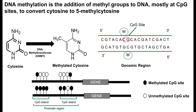What DNA methylation is, is basically the addition of a methyl group to DNA in the presence of DNA methyltransferases. So you have DNA methyltransferase 1 and DNA methyltransferase 3. DNA methyltransferase 3a is what helps create your methylation de novo, whilst DNMT1 is what maintains DNA methylation during replication.